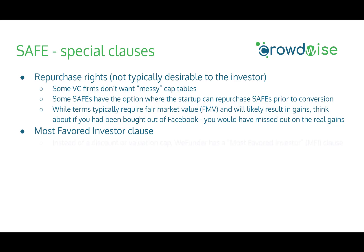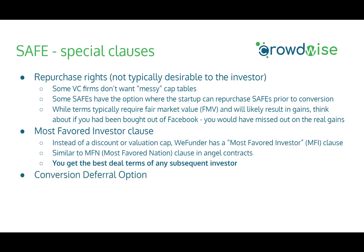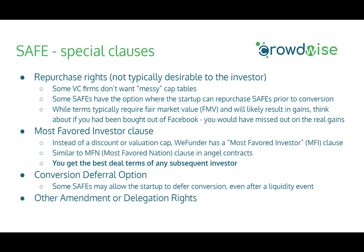Next, there's the Most Favored Investor Clause, recently offered by WeFunder. Instead of a discount or valuation cap, it gives early investors the best deal terms of any subsequent investor — similar to an MFN clause in angel contracts — kicking the can down the road. Also, some SAFEs have conversion deferral options, allowing the startup to defer conversion to equity even after what would typically be a liquidity event, giving founders maximum flexibility. Other amendment clauses may allow a lead investor to amend SAFE terms in the future, so understand who those rights are delegated to.